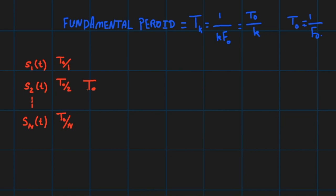It's not the fundamental period but it's a period. For the signal s_n(t), T₀/n is a period and so is T₀. So all these signals have a common period and what is it? It's T₀.